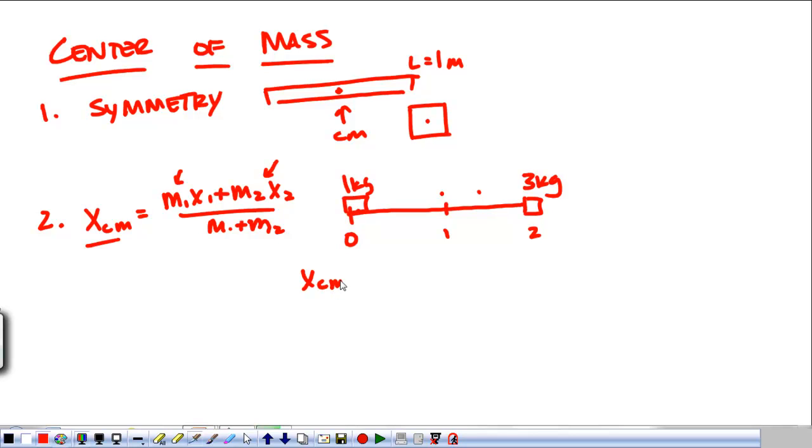So in this simple example, the x position of the center of mass is m1, 1 kilogram, times 0, that's its location, plus 3 kilograms times 2, that's its location, divided by the total mass, 4 kilograms.